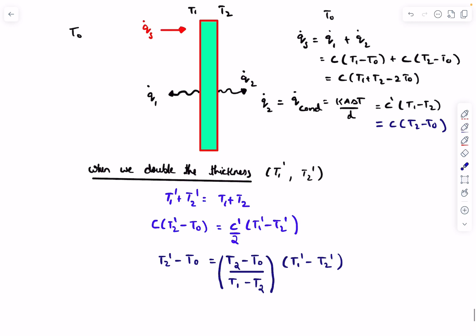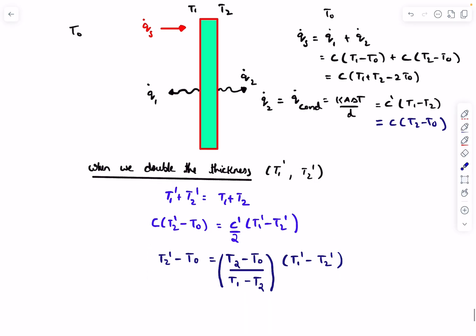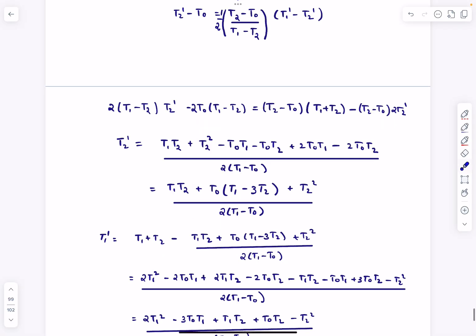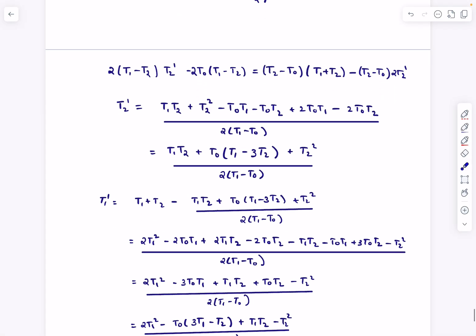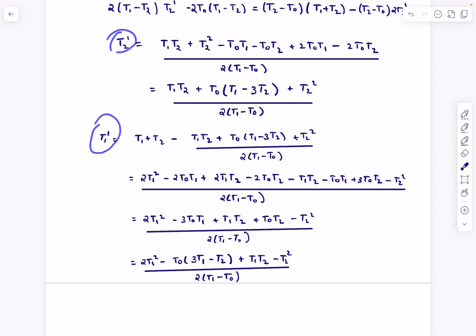After substituting the value of C prime divided by C, we get this relation. Now we have two equations in the variables T1 prime and T2 prime. All we have to do is just solve them. After substituting and a bit of calculations, you get these two answers for T1 prime and T2 prime. That's basically it for this question. Now let's move on to the next one.